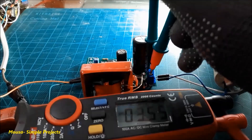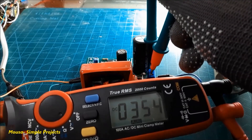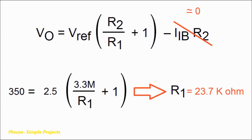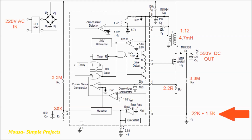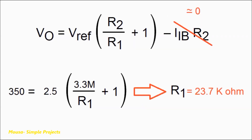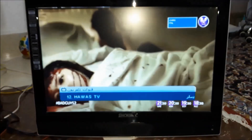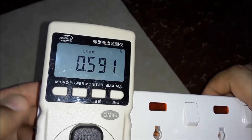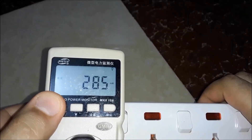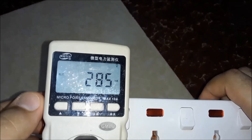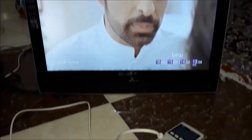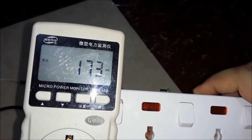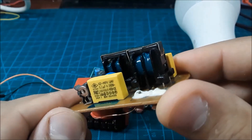The output voltage is 354 volts DC, which is 4 volts more than my calculation because I used a 23.5 kilohm resistor instead of 23.7 kilohms. I also used this circuit for the TV. The power factor before using the circuit was 0.59 and the current drawing was 285 milliamps, but after using the circuit the power factor became 1 and the current drawing became 173 milliamps.